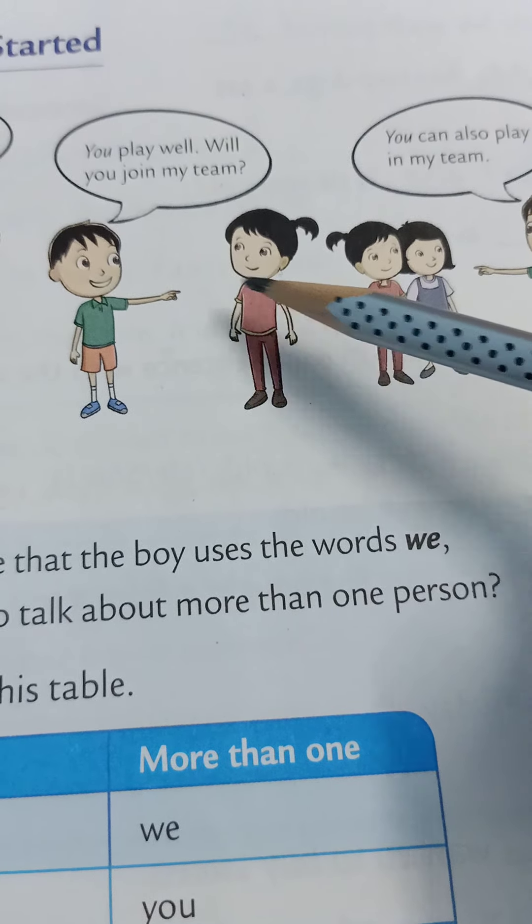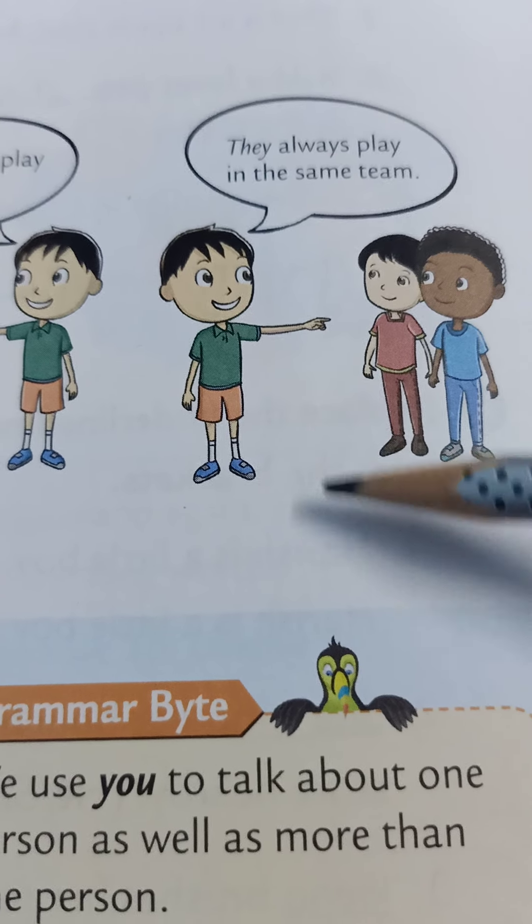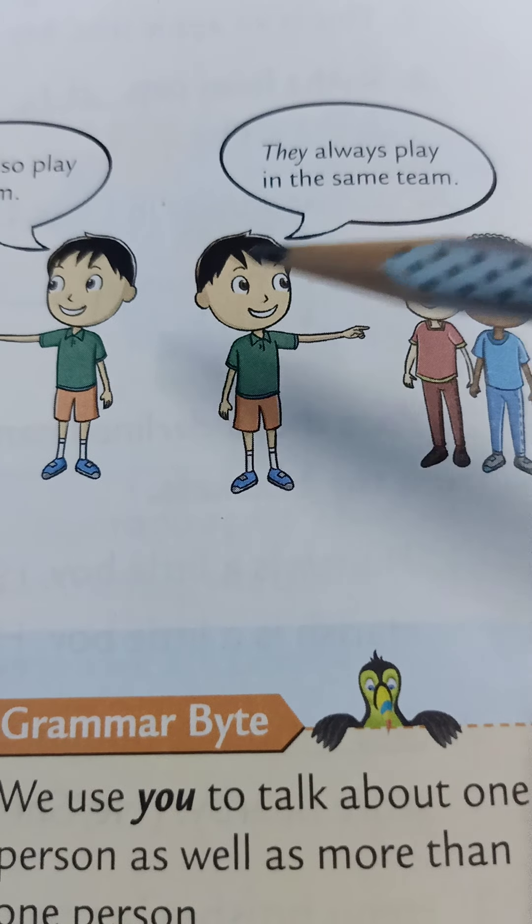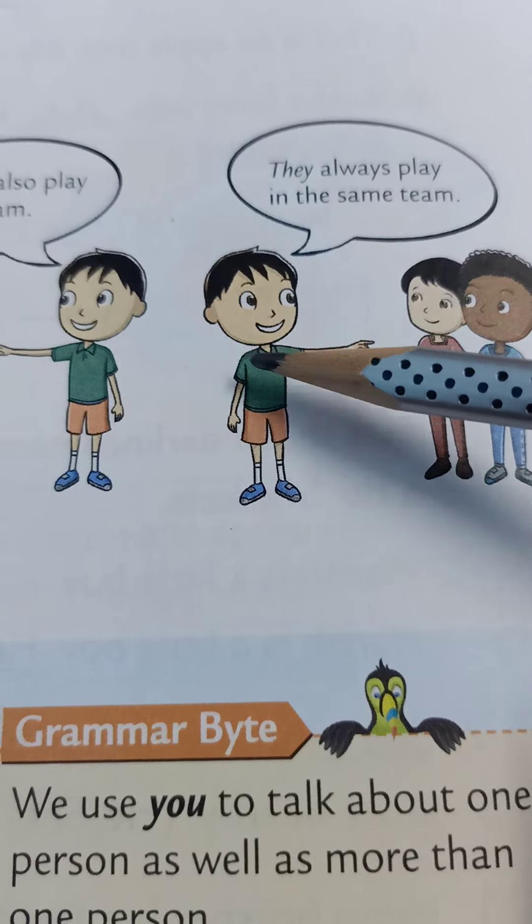Now, one more thing here, children: they always play in the same team. They always play — they means more than one here. One child is pointing to them, so we will put they. They always play in the same team. So children, did you notice? The boy uses the words we, you, and they to talk about more than one person.